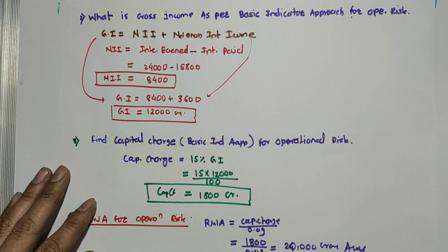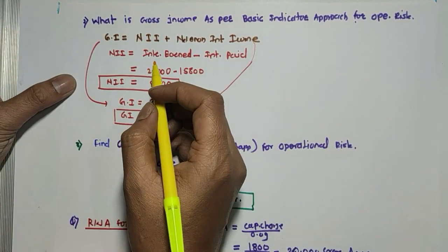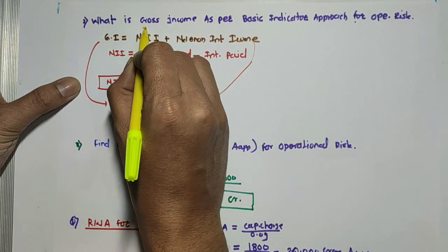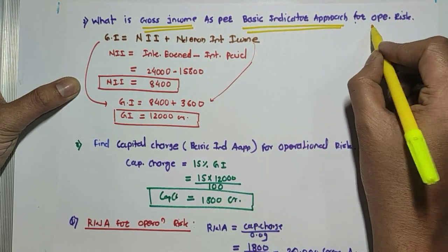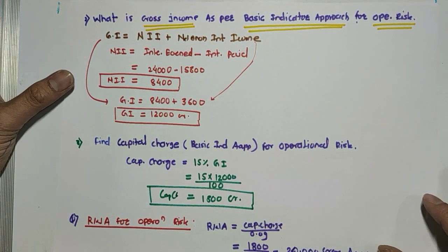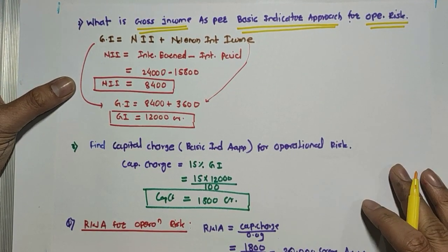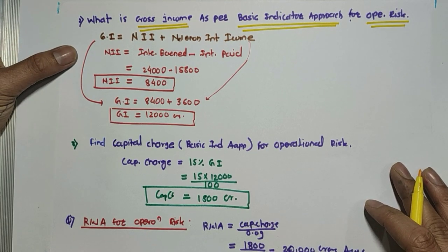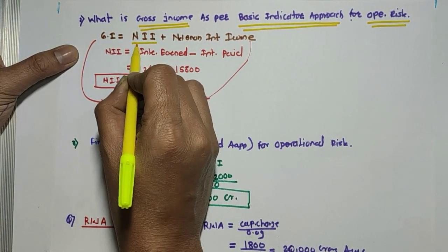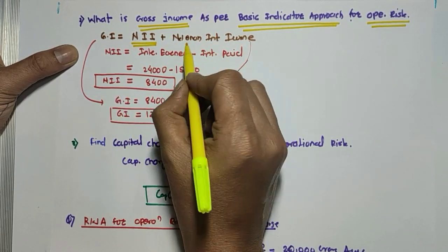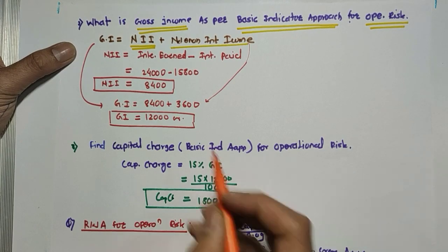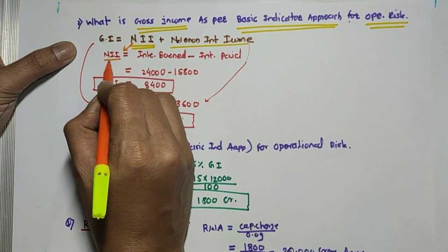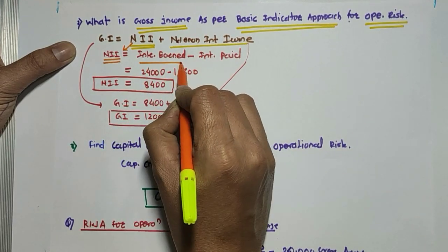The next question is very important: what is the gross income as per the Basic Indicator Approach for operational risk? You must know the Basic Indicator Approach. Gross income is nothing but net interest income plus net non-interest income — you have to add both. Net interest income is simply interest earned minus interest paid.